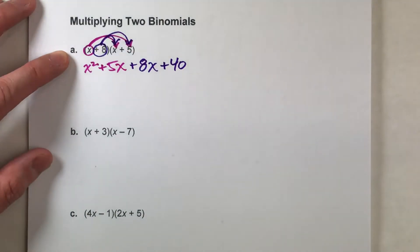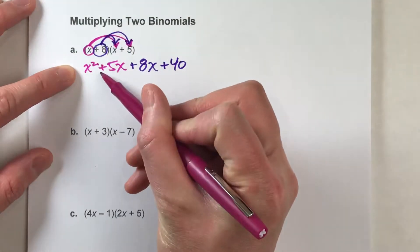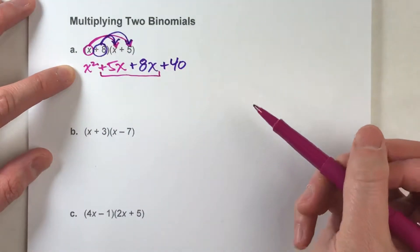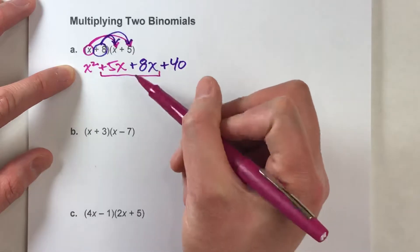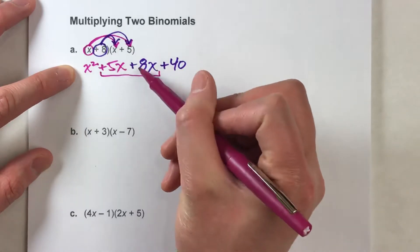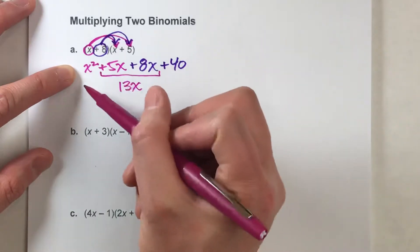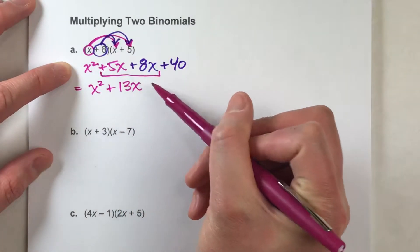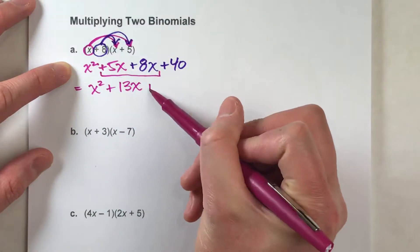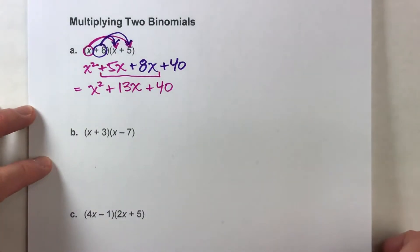You're basically multiplying everything in the first set of parentheses by everything in the second set of parentheses. And notice when you do that, you have some like terms here. Right here in the middle we've got 5x's and 8x's, and 5x plus 8x gets me 13x. So this whole thing simplifies to x squared plus 13x plus 40, and that's as simple as it gets.